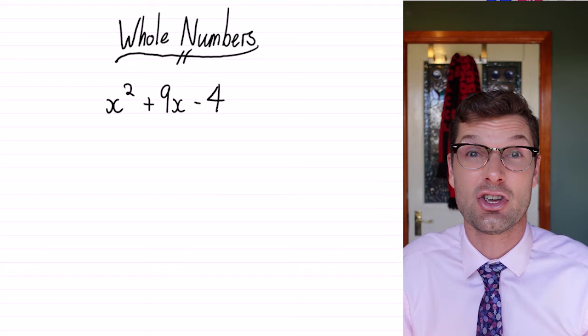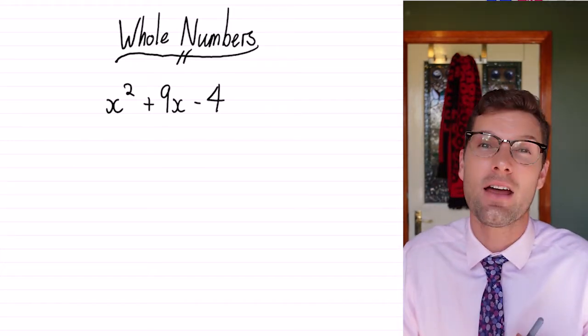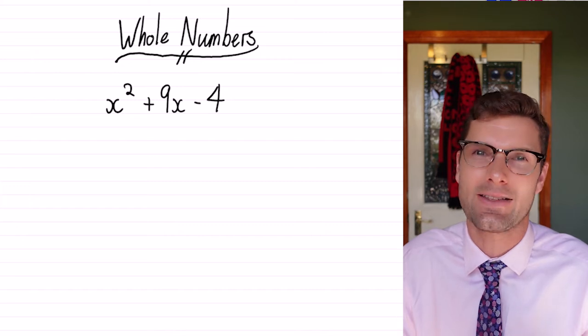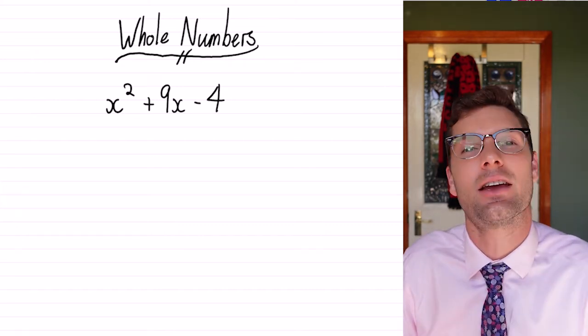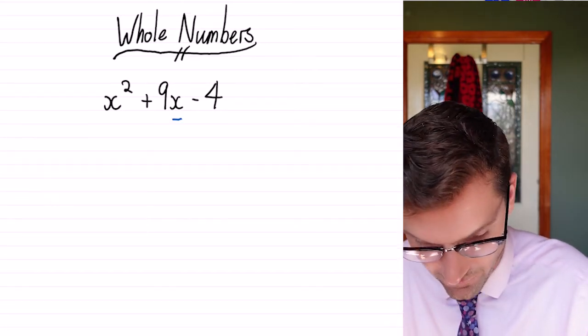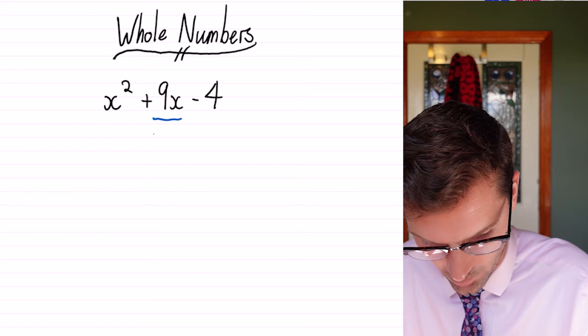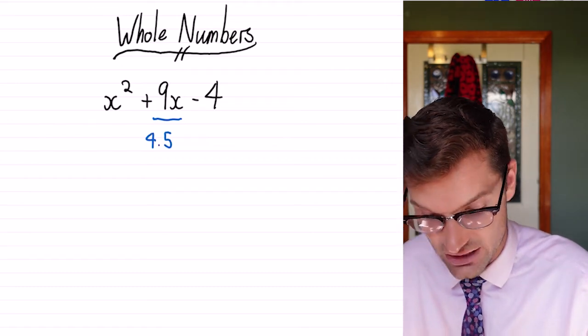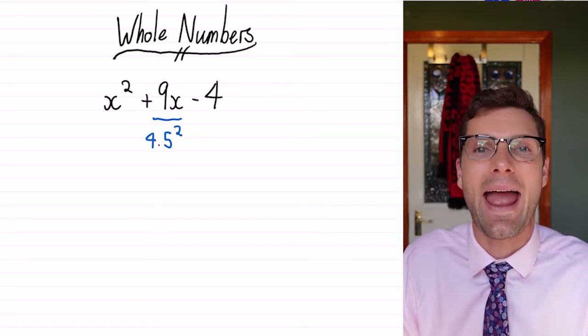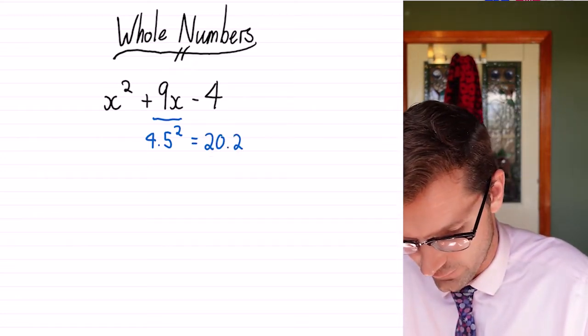So for this first example, we're just going to use whole numbers to see if that makes sense. The first steps are all exactly the same, just the numbers you get are going to be a little bit more annoying. So for this first one, we still have to divide nine and then square it. So half of nine is 4.5, and we have to square that to get the term that we're adding and subtracting. If you throw that into your calculator, it's going to be 20.25.